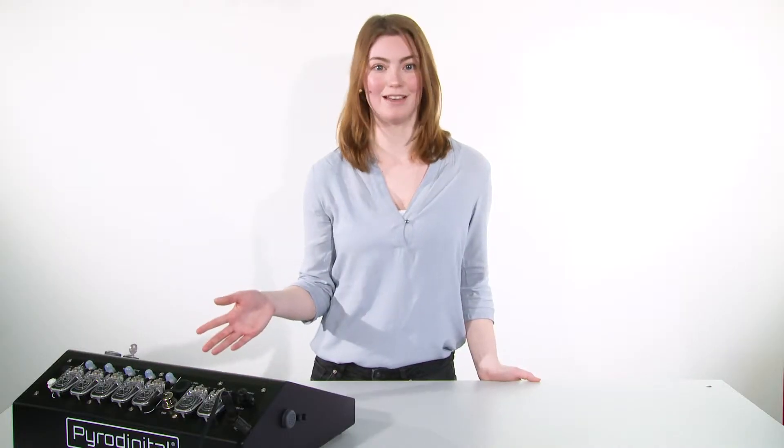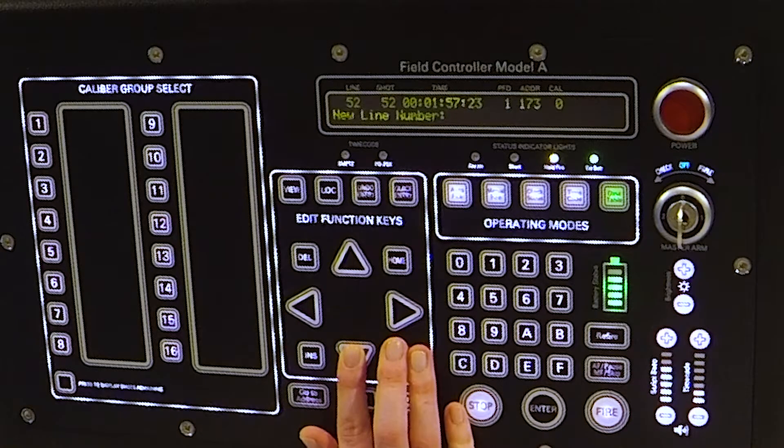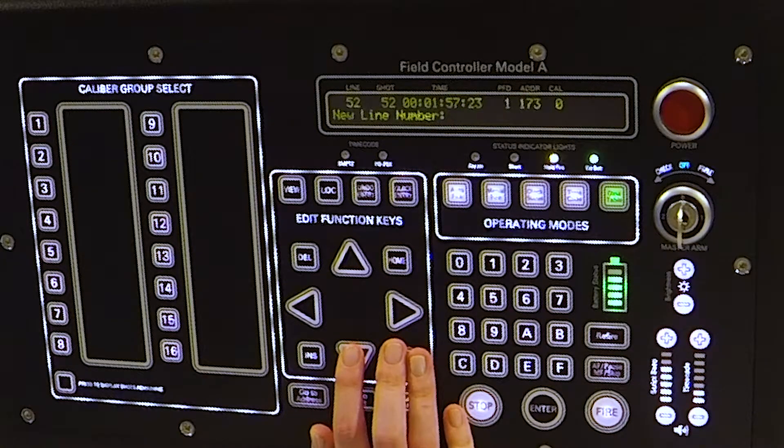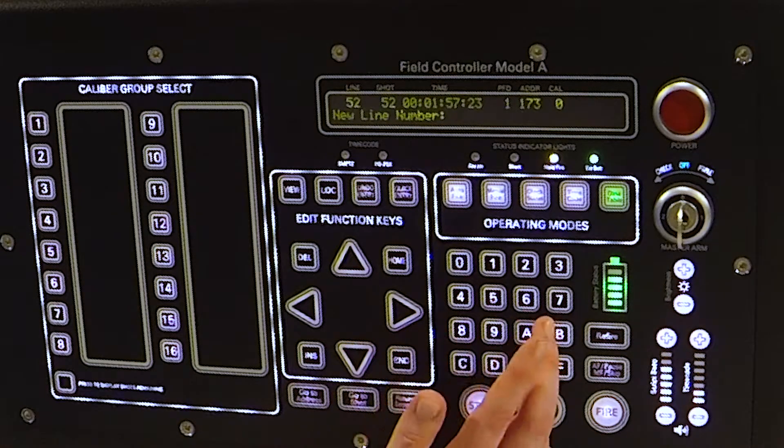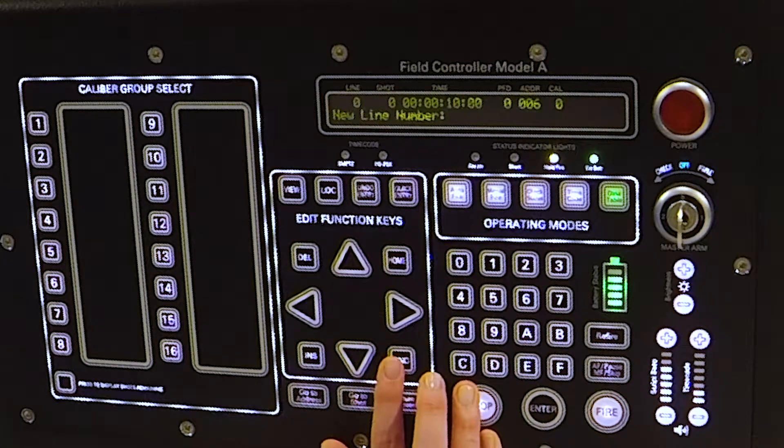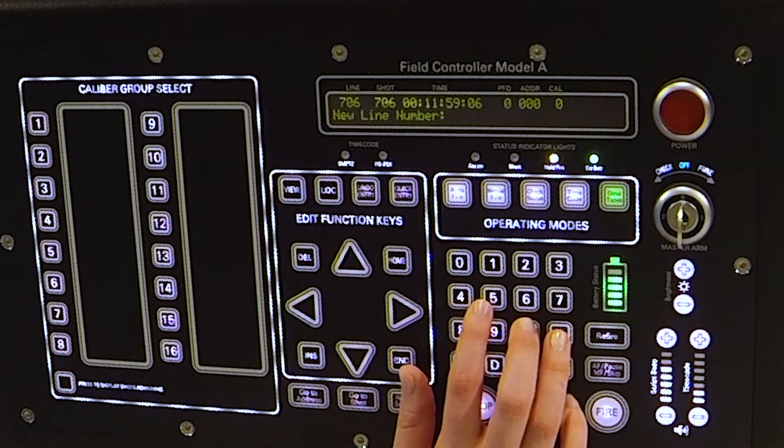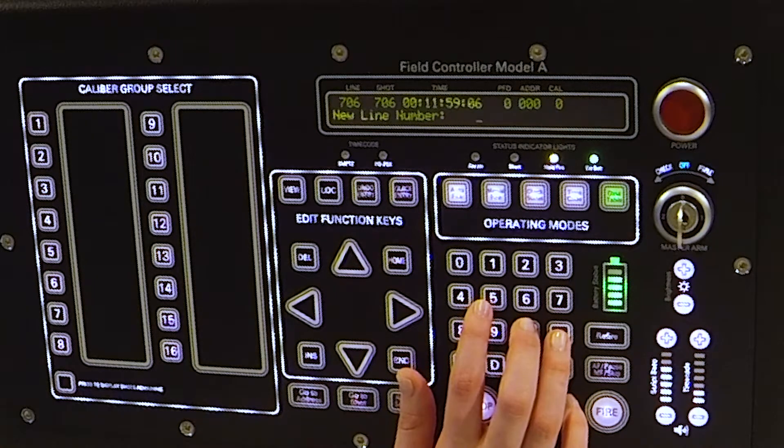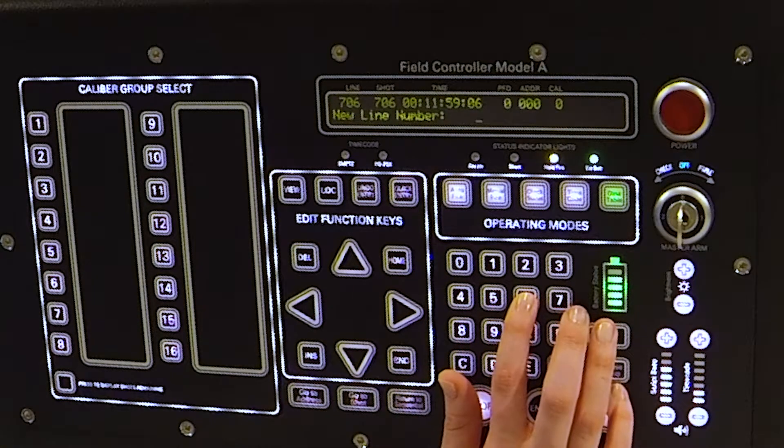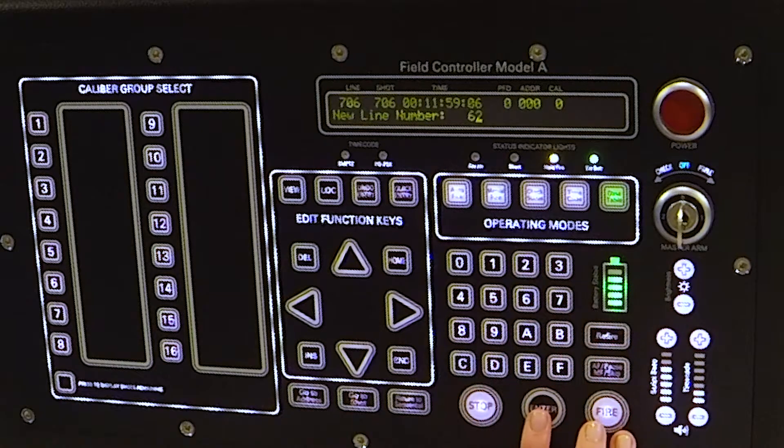Use the up and down button to jump one event line per depression. You can also use the home button to jump to the top of your script table, or the end button to jump to the end of your script table. You can also search by a specific line by typing in the line number you would like to see and press enter.